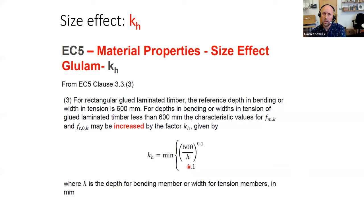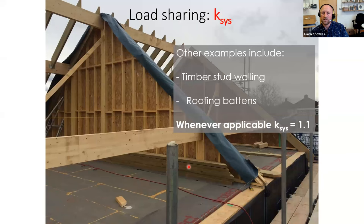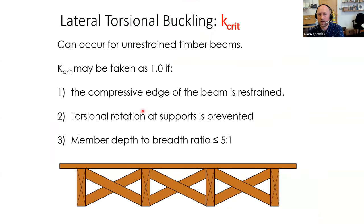Load sharing is really important. With our floor plate, an enhancement applies because the floorboard distributes load when someone stands on it, and some joists within the floor may be stronger than others. That gives K_sys = 1.1. A good example is also a timber stud wall, where all the studs share load through the OSB sheathing — one stud may be stronger than its neighbour.